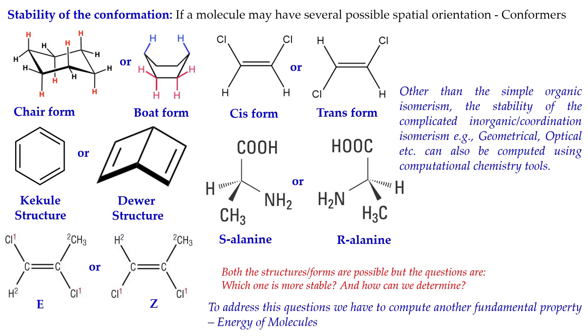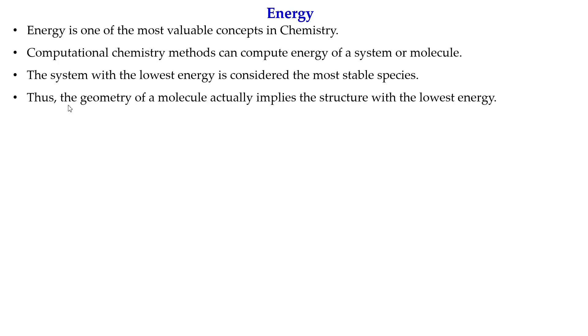To address these questions, we need to compute another fundamental property: the energy of molecules. For example, if we calculate the energy of both the chair and boat forms of cyclohexane and find that the chair form is lower in energy, we can say it is more stable. Energy is one of the most valuable concepts in chemistry. Computational chemistry methods are used to compute the energy of the system, and the system with the lowest energy is considered the most stable species.